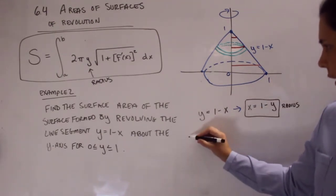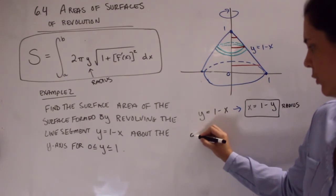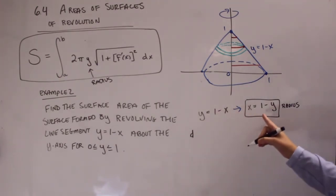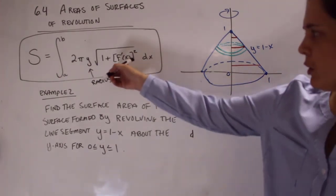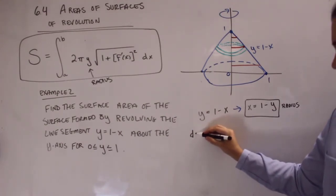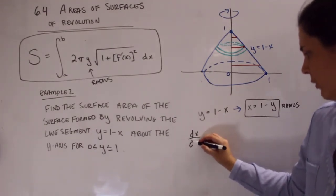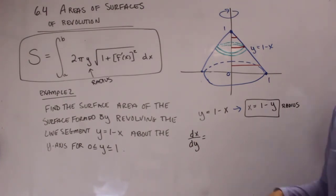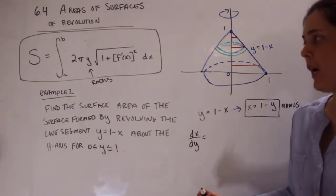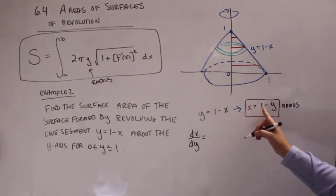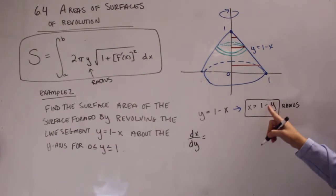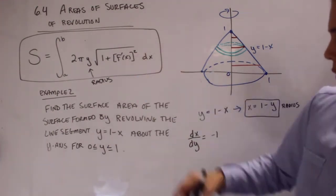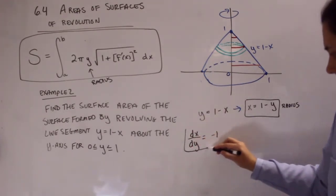And then the next thing we need is the derivative. So in this case, since we just changed the way we're thinking about our function from this original formula, our derivative is actually going to be the derivative of x with respect to y. So you would say f prime, but this time it's like f of y prime. And so derivative here, let's differentiate from this version. Derivative of x with respect to y is just going to be negative 1. So negative 1. And that's going to get plugged into our formula here. So let's box that in as well.